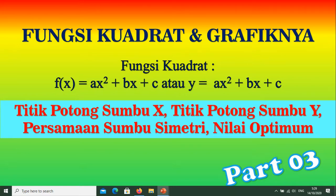Yang bagaimana bentuk umumnya yaitu f(x) sama dengan ax kuadrat tambah bx tambah c atau y sama dengan ax kuadrat tambah bx tambah c. Pada kesempatan kali ini kita akan membahas tentang titik potong sumbu x dan titik potong sumbu y, serta persamaan sumbu simetri dan nilai optimumnya untuk menggambar grafik fungsi kuadrat tersebut.